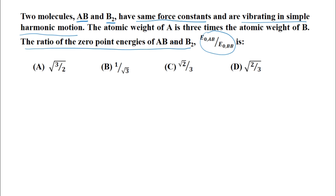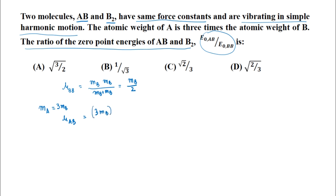Let us find the reduced masses. For B₂: μ(B₂) = m_B × m_B / (m_B + m_B) = m_B / 2. Since m_A = 3m_B, the reduced mass for AB is: μ(AB) = 3m_B × m_B / (3m_B + m_B) = 3m_B² / 4m_B = 3m_B/4.